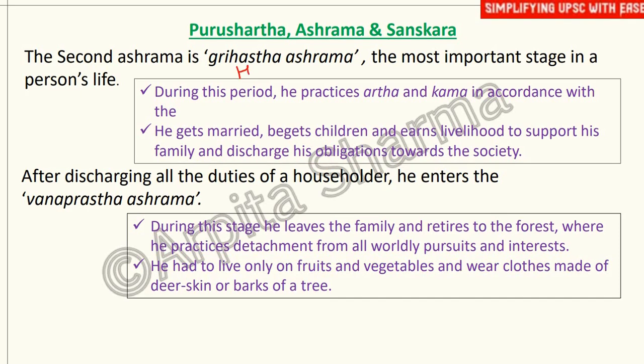The second Ashrama is Grihastha Ashrama — the householder stage — when you get married and have children. Here you practice Artha and Kama: you satisfy your worldly desires and earn livelihood to support and feed your family, discharging your obligations towards society.